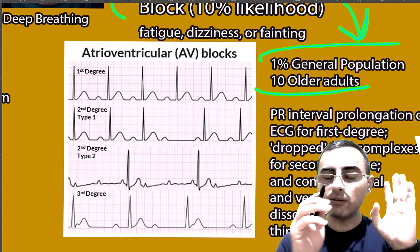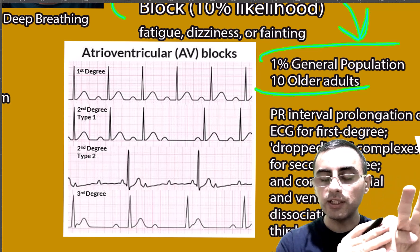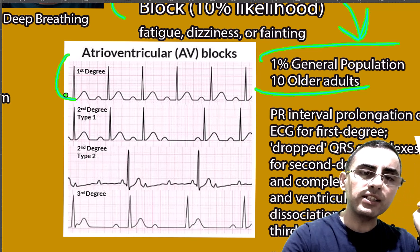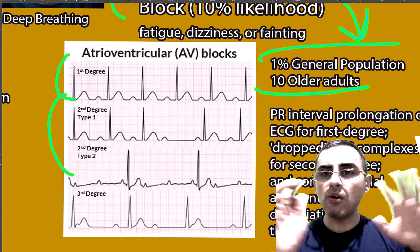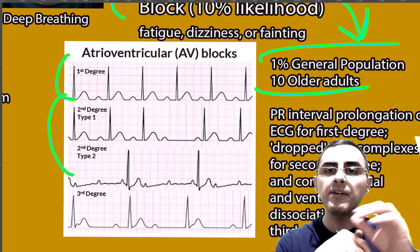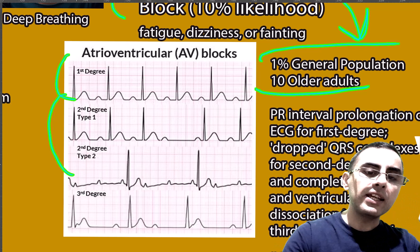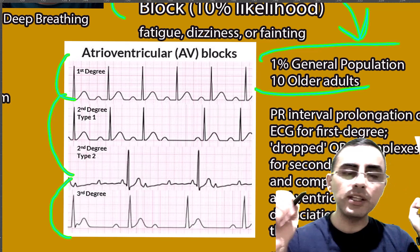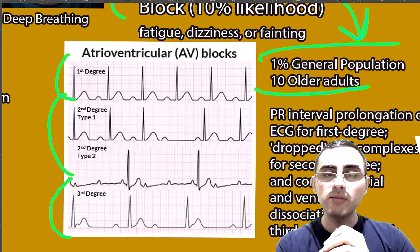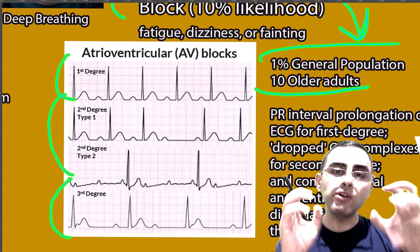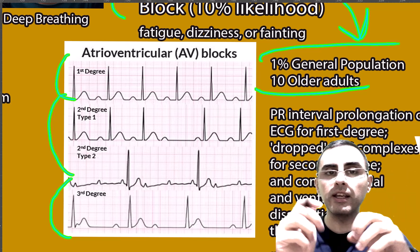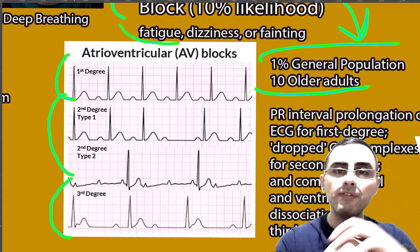Atrioventricular block is a serious type of arrhythmia with three degrees. First degree is a mild version and third degree is severe. In first and second degree, bradycardia is rare, but in third degree, bradycardia is common, along with fatigue, dizziness, or fainting.